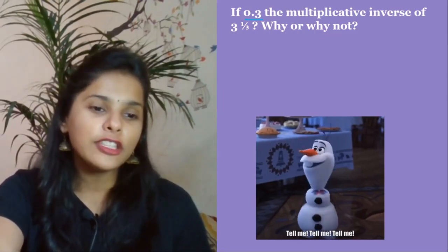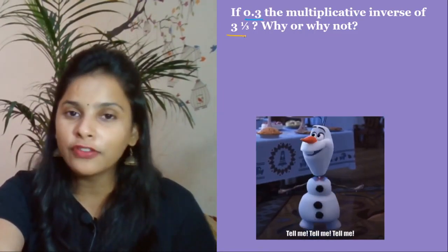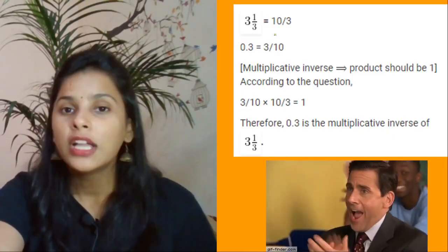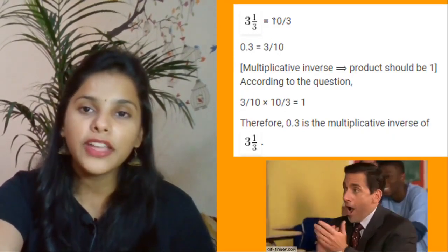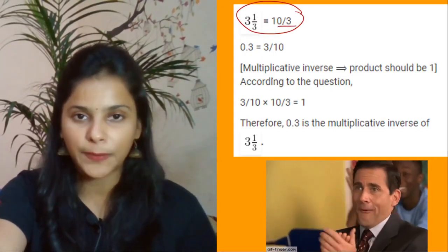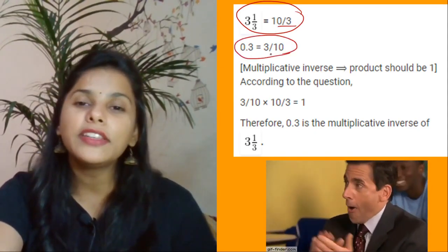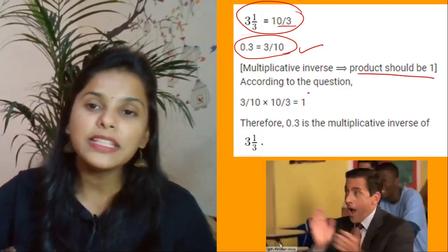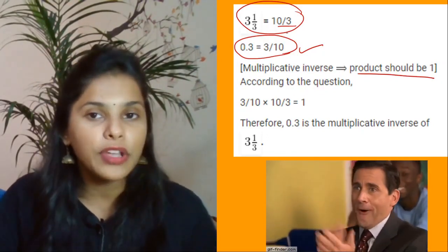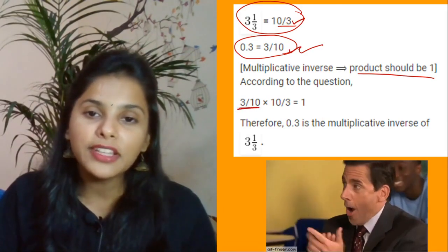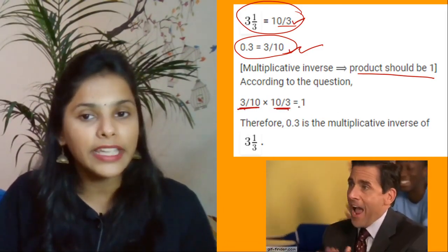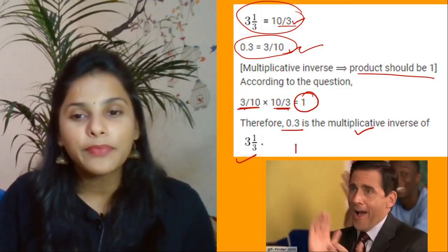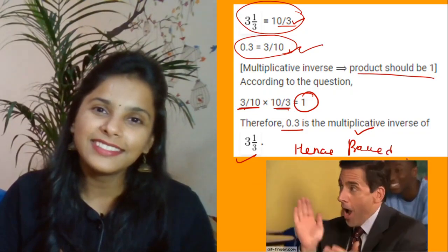Next: is 0.3̄ the multiplicative inverse of 3⅓? You need to prove this. Write 3⅓ as a proper fraction: 3×3+1 = 10, so it is 10/3. And 0.3̄ can be written as 3/10. The multiplicative inverse means the product should equal 1. Multiplying 3/10 × 10/3 gives 1. Therefore, 0.3̄ is indeed the multiplicative inverse of 3⅓. Hence proved!